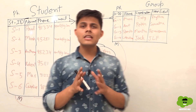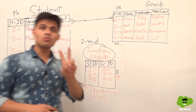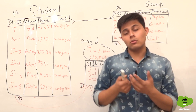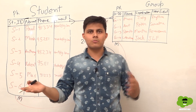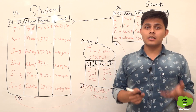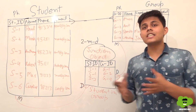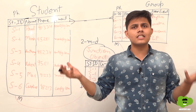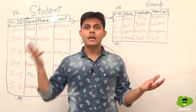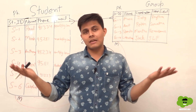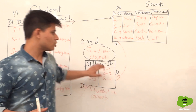In a master detail relationship, the owner field is derived from the master object. Since the junction object has two masters, the owner field is derived from the primary master object. Look and feel is also derived from the primary master object. However, security and sharing settings are derived from both — the primary master object as well as the secondary master object. Both the primary and secondary relationships control the security and sharing settings of the junction object.